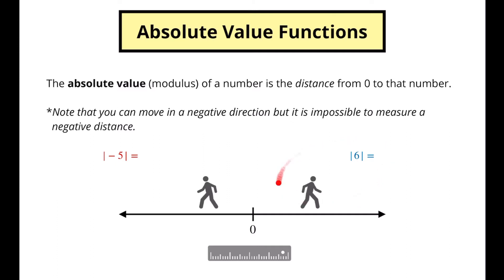Let's start with this person over here. They are walking in this direction and let's say they are moving six units and we're going to measure how far they've gone. That will be six units. So if the distance from zero to six, the absolute value is just going to be that six. Now what about this person over here? Where are they going?